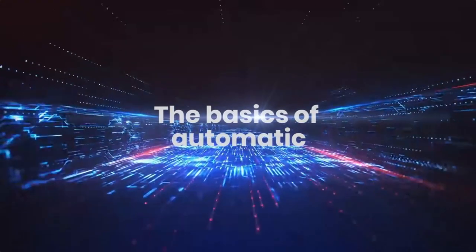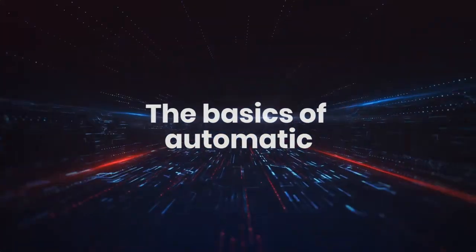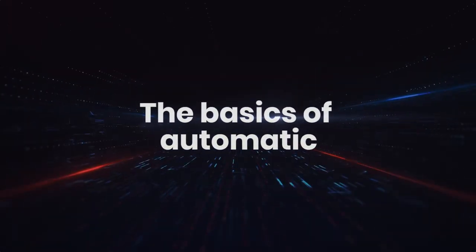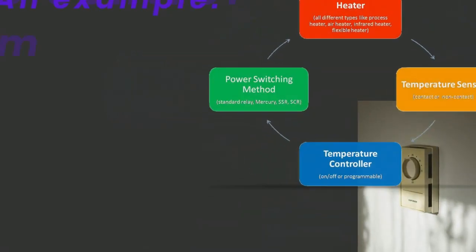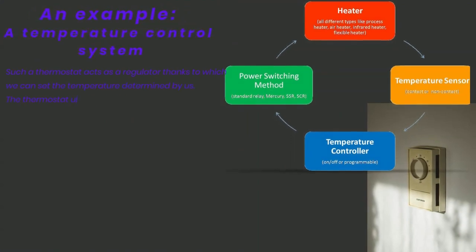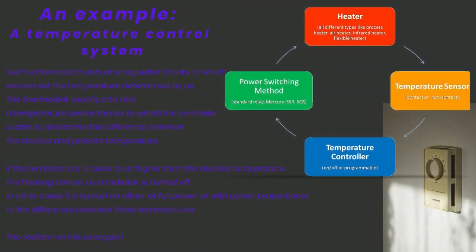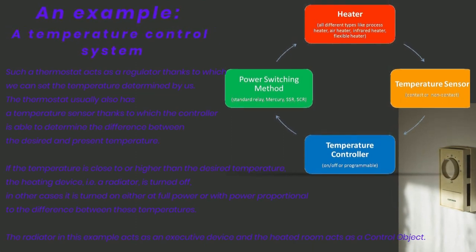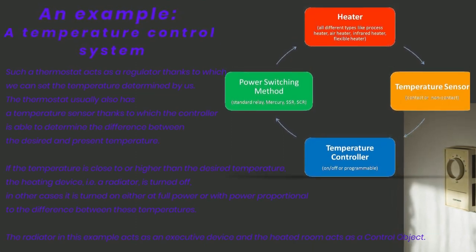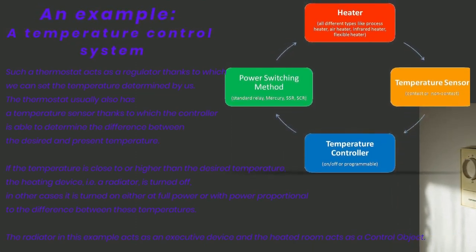The purpose of an automatic thermostat is to maintain the desired room temperature while minimizing energy consumption — for example, it will keep your home warm when you are not at home in cold weather. A temperature control system is a device that regulates the temperature in a room using a heating, ventilation, and air conditioning (HVAC) system.